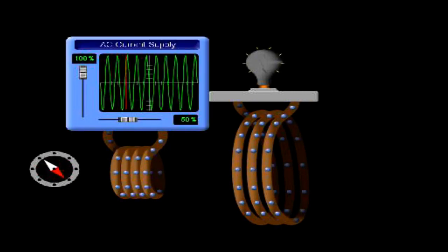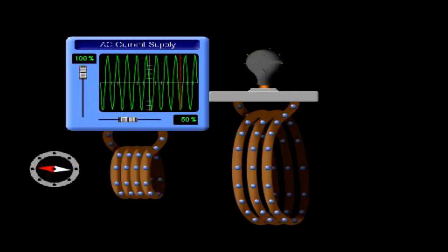With an alternating current, there is an alternating magnetic field, and this alternating magnetic field drives electrons backwards and forwards in a second coil.